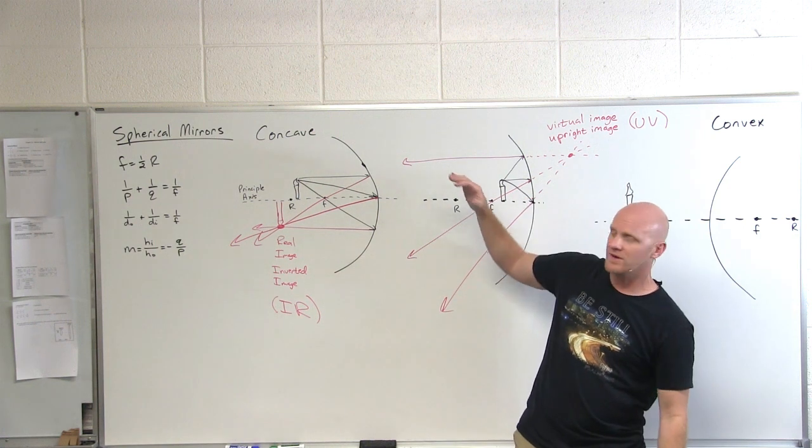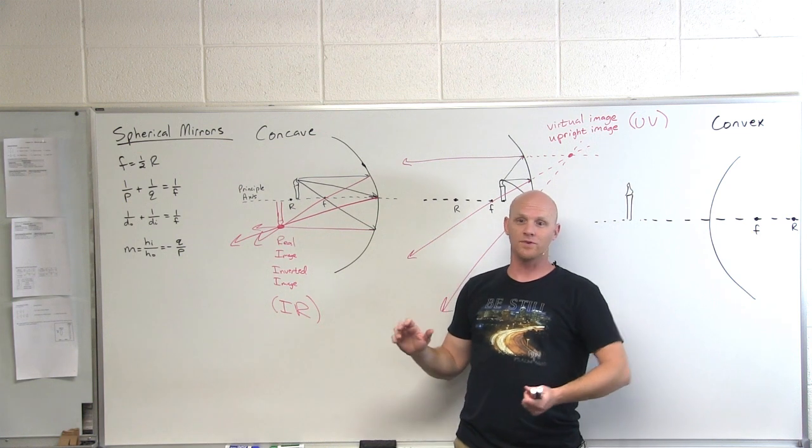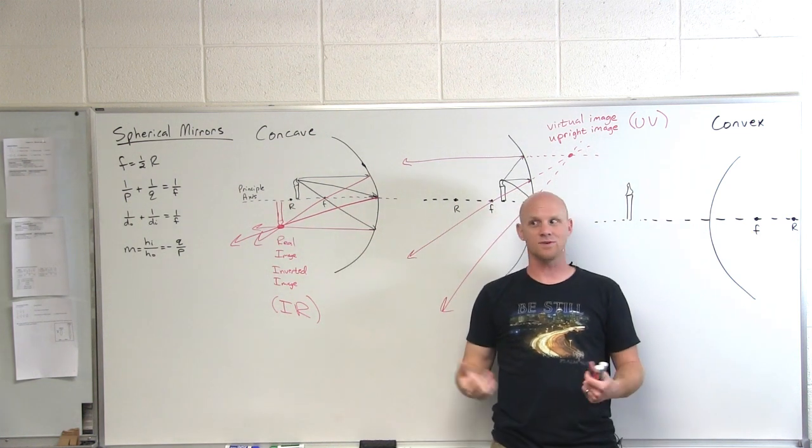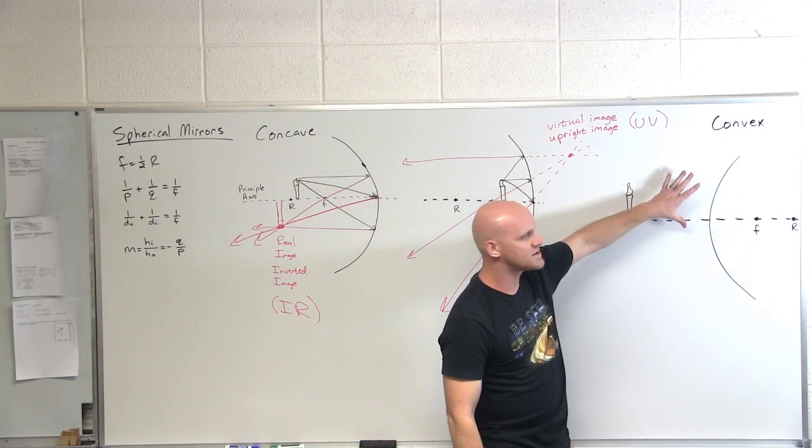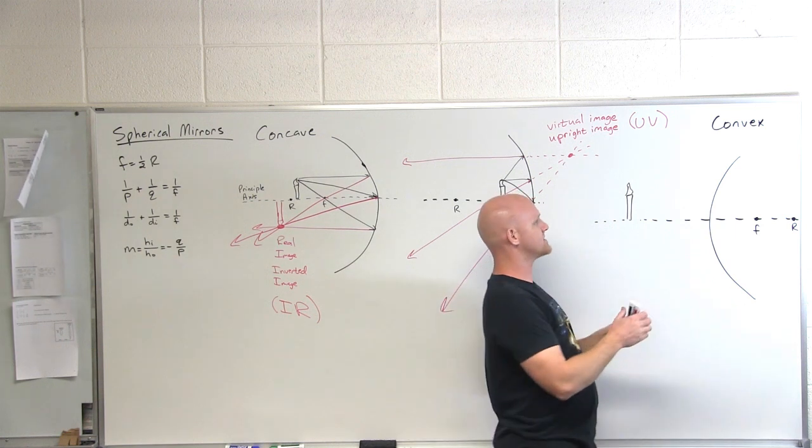The concave mirror really had two situations, whether you're within the focal distance or beyond the focal distance, and then even beyond the focal distance, are you past the radius of curvature or still within the radius of curvature? So it's really kind of three situations. But with your convex mirror, there is only one situation. It never changes.